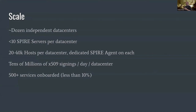For the scale, we have about a dozen independent data centers with less than 10 Spire servers per data center. Each one has tens of thousands of hosts in it, with a dedicated Spire agent on each. Every data center every day is performing tens of millions of X.509 signings from Spire. Today we have over 500 services onboarded to Spire, which is less than 10% of the internal services at Uber.